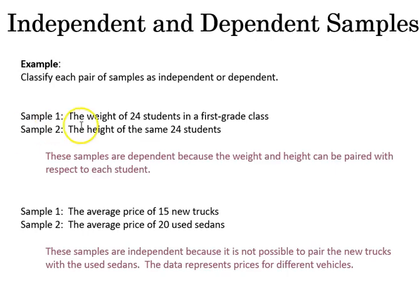Each member of one sample corresponds to a member of the other. So if we want to, for example, compare the weight of 24 students in a first grade class to the height of the same students, well because they're the same students those samples are dependent, they are paired together with respect to each student.